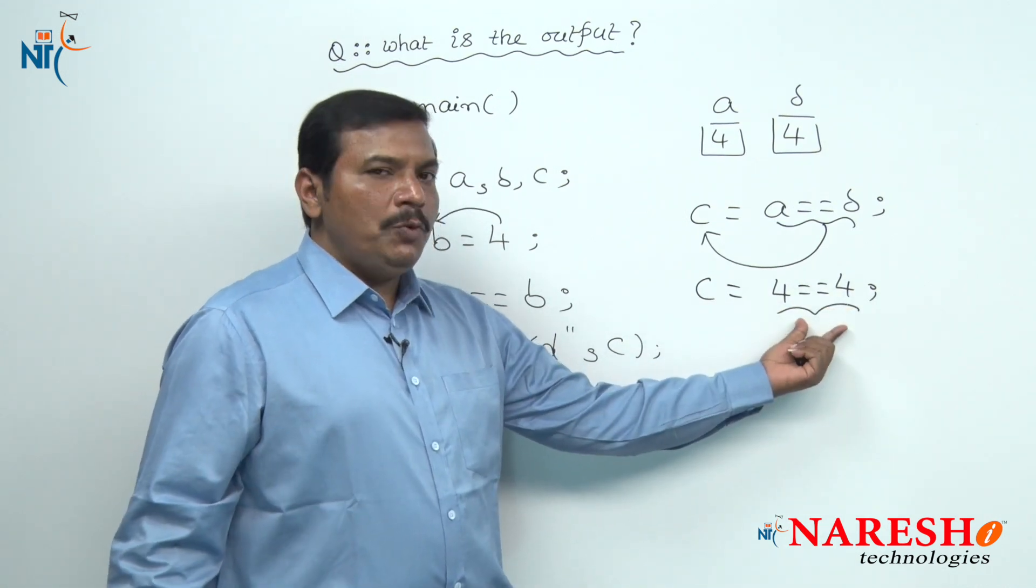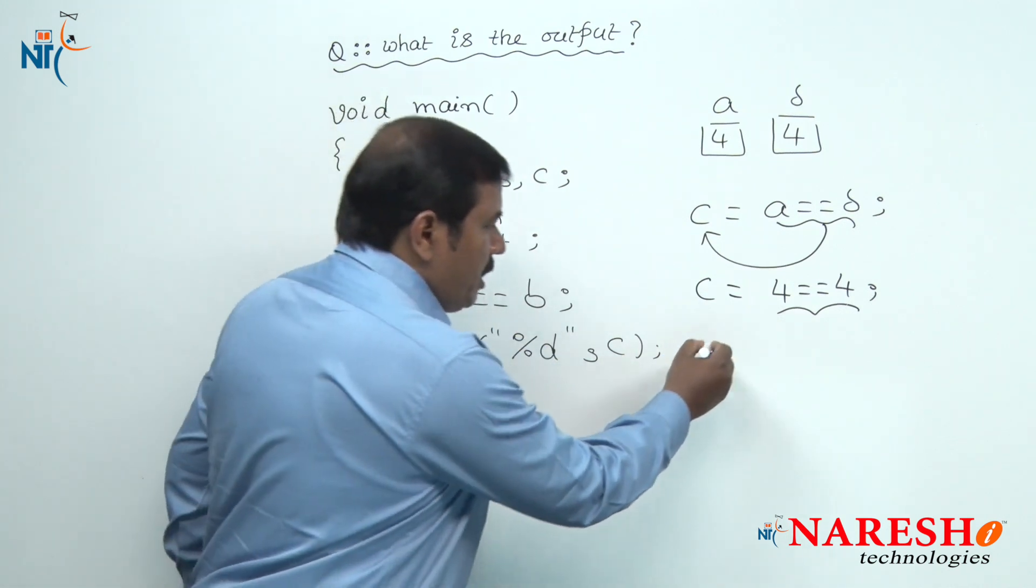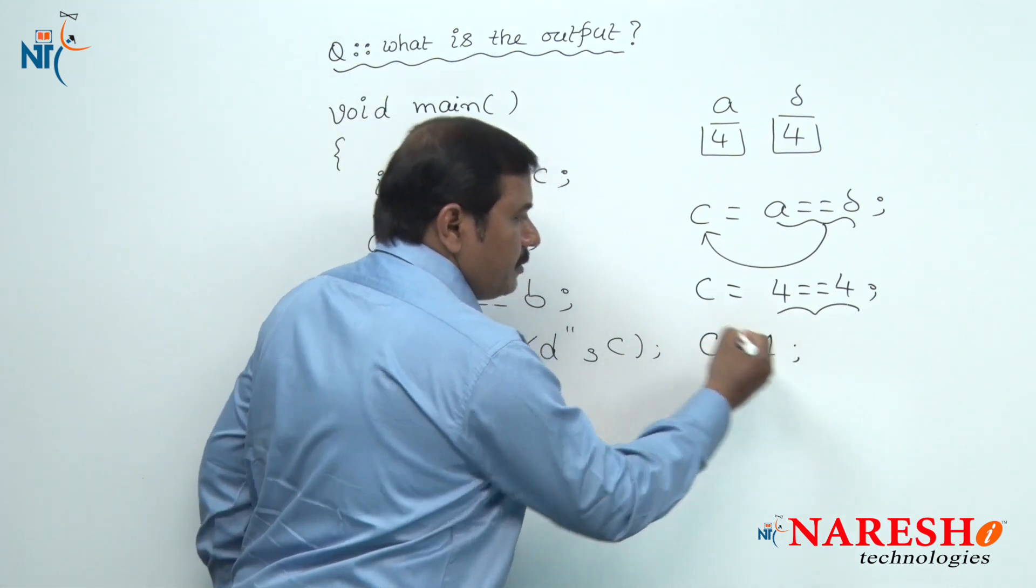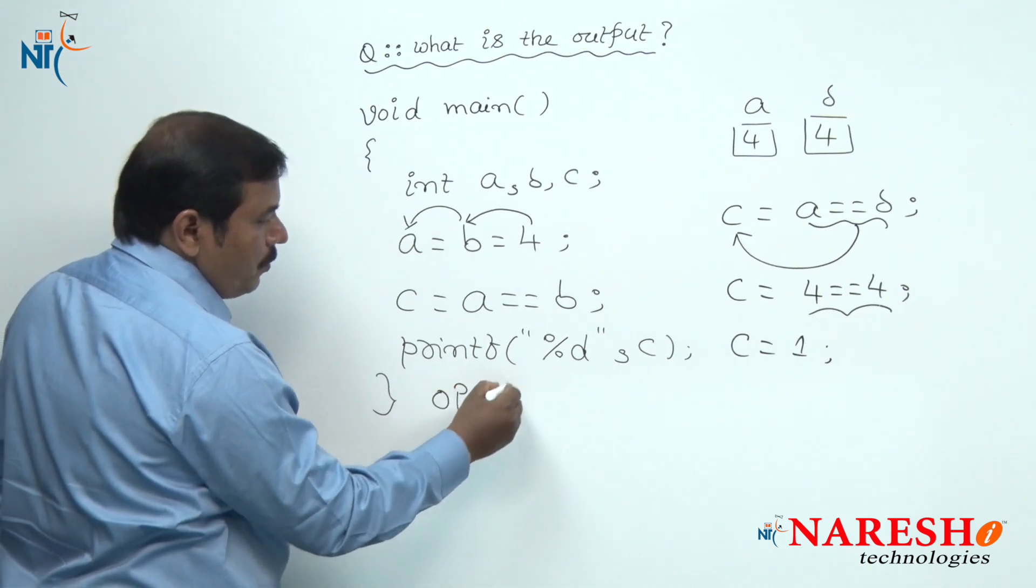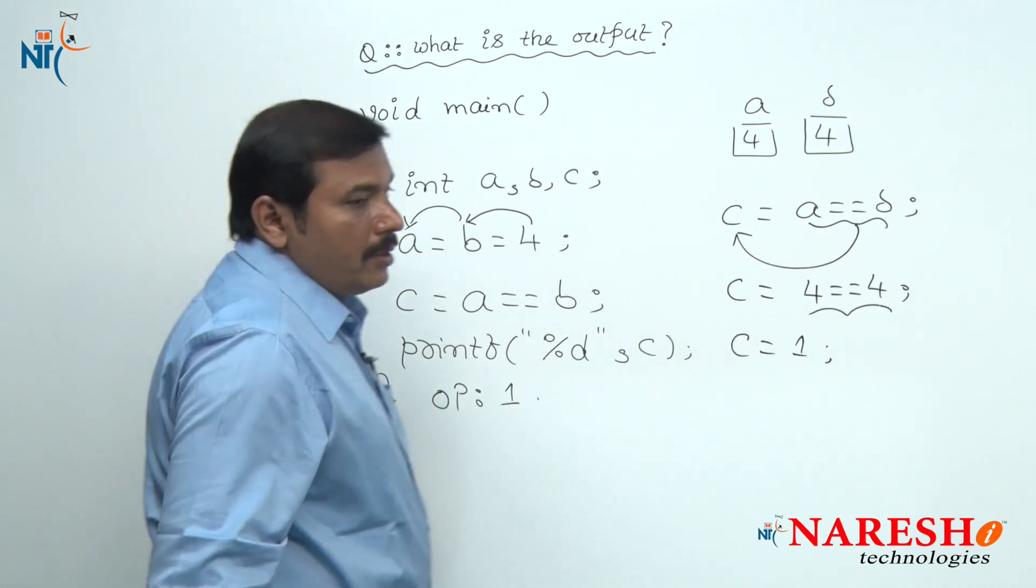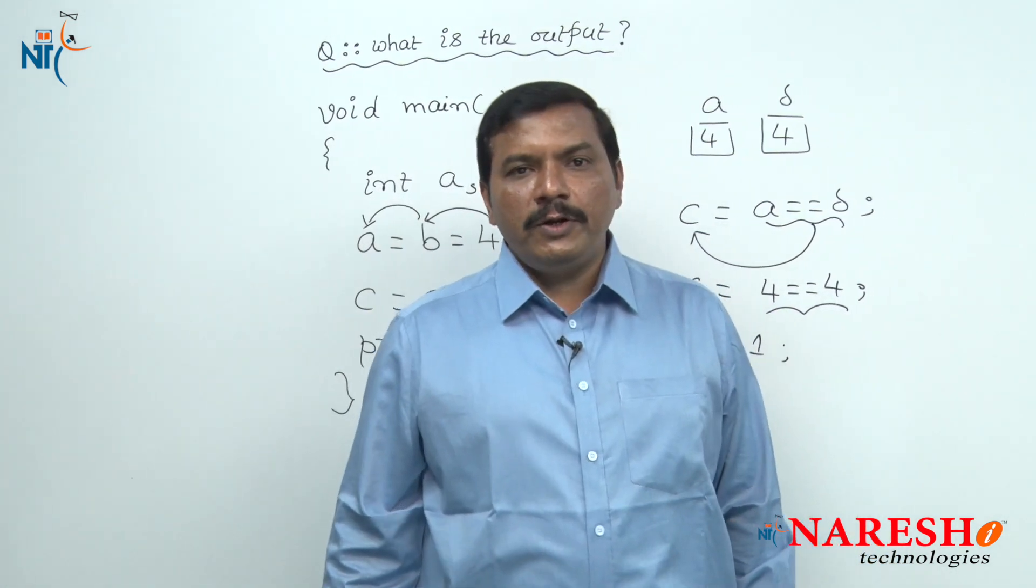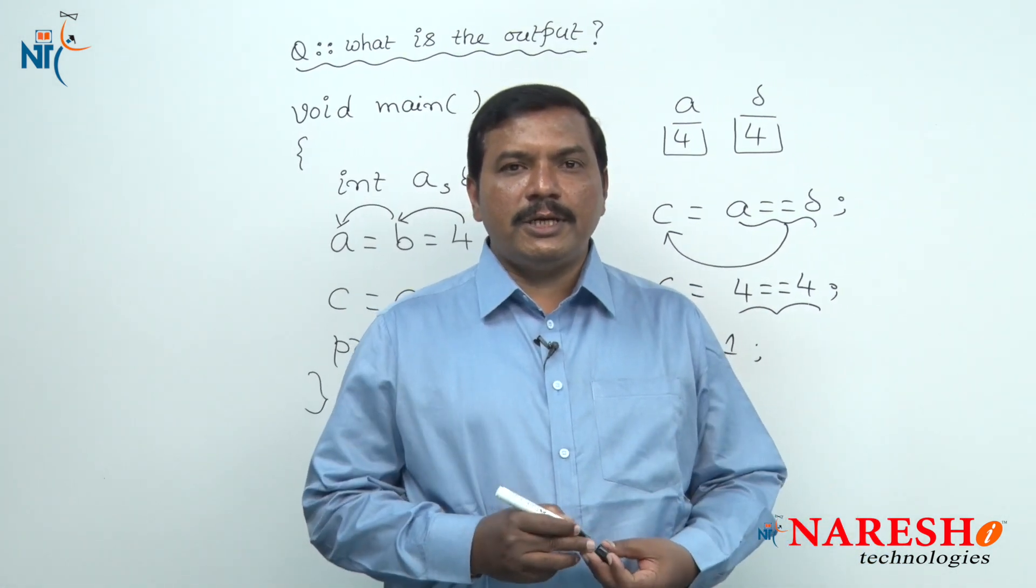Hence, the value 1 is assigned to variable C. The final result of this code is 1. Thank you for watching this video. For more videos, subscribe to Naresh IT channel.